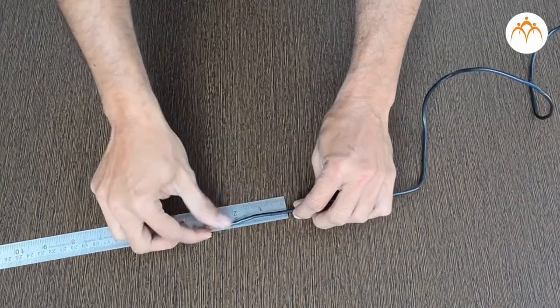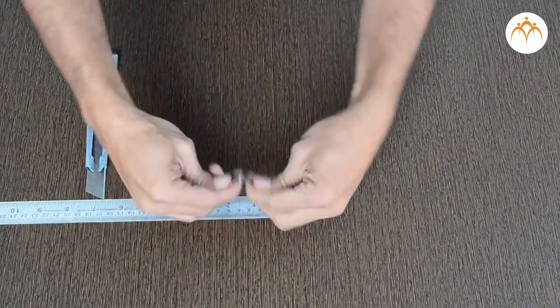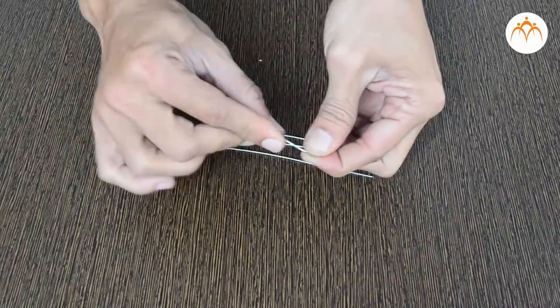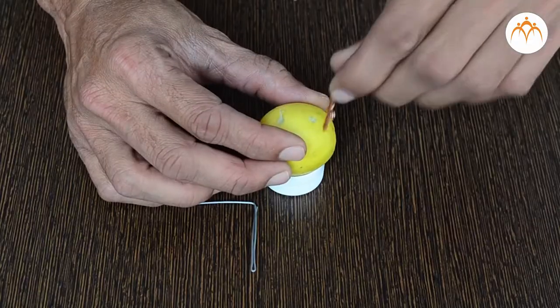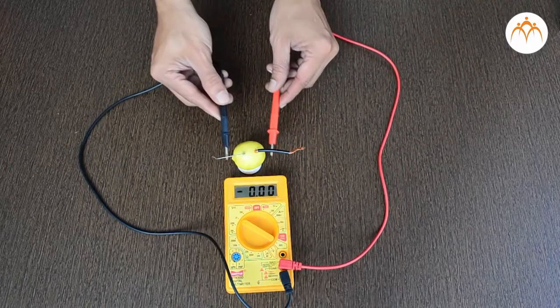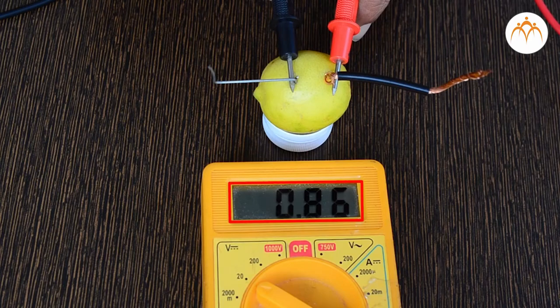Multi-strand wire is taken and bound to form a thick wire. Five centimeter long pieces of galvanized sheet wire and copper wire are inserted to form a basic cell. Lemon juice acts as an electrolyte. This single unit has very less power.